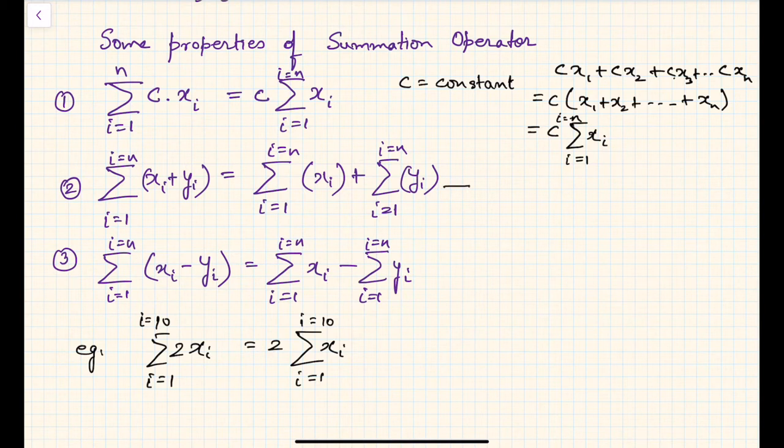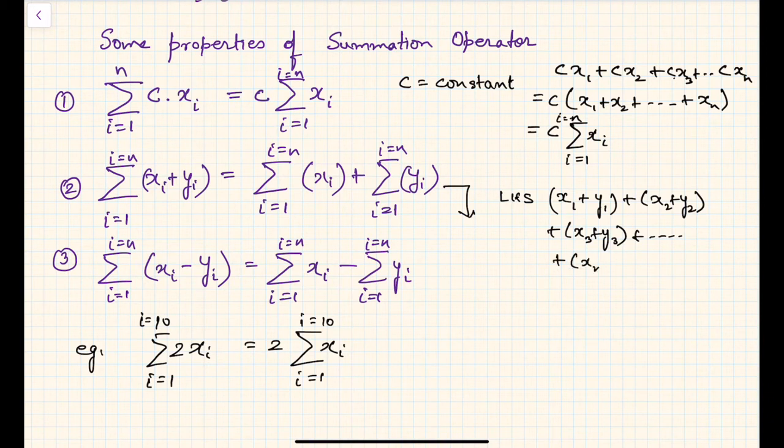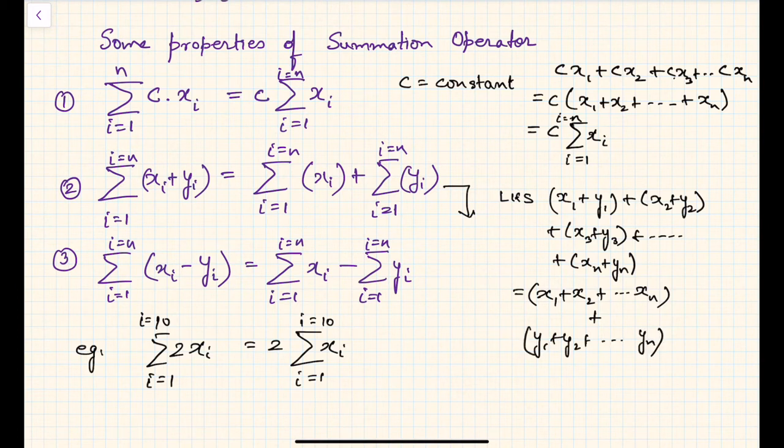In this example, there are two variables x and y. The left-hand side gives you x1 plus y1, then x2 plus y2, then x3 plus y3, and so forth till xn plus yn. You can rearrange them: all x together (x1 plus x2 till xn) plus all y together (y1 plus y2 till yn). This is summation x_i from i equals 1 to n plus summation y_i from i equals 1 to n.